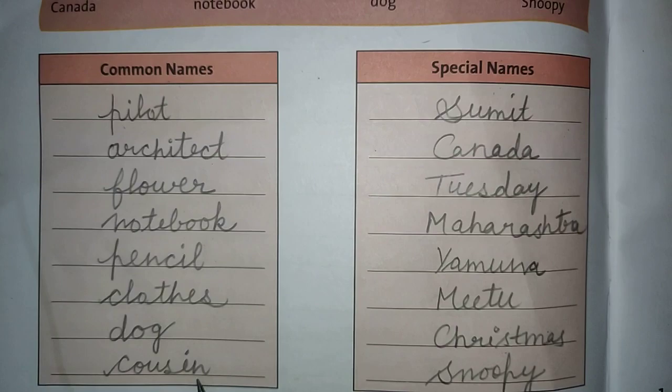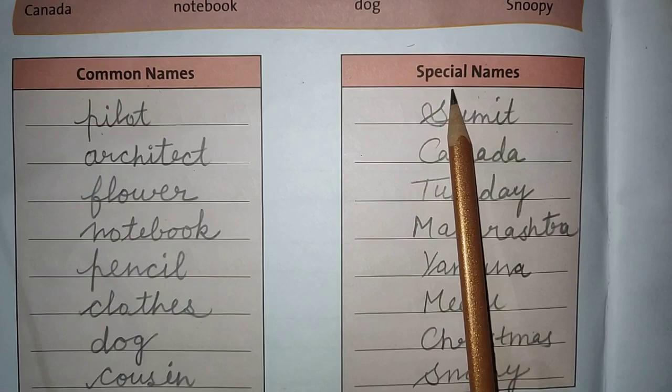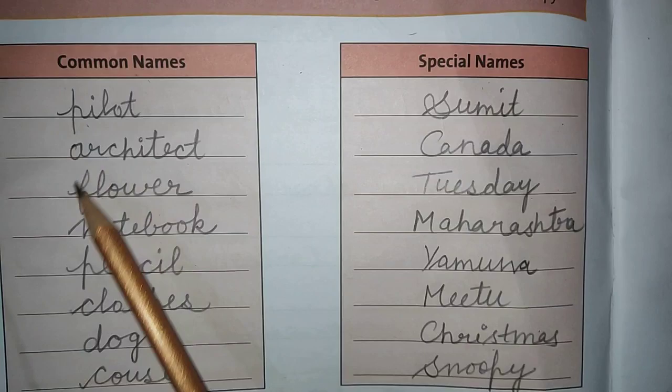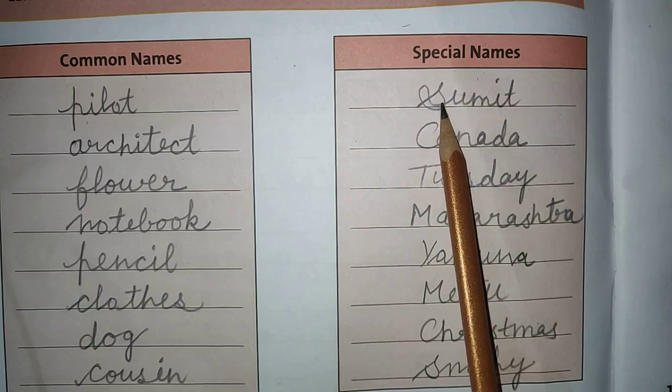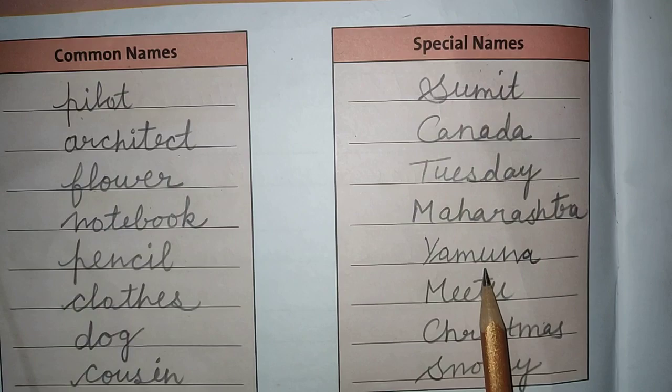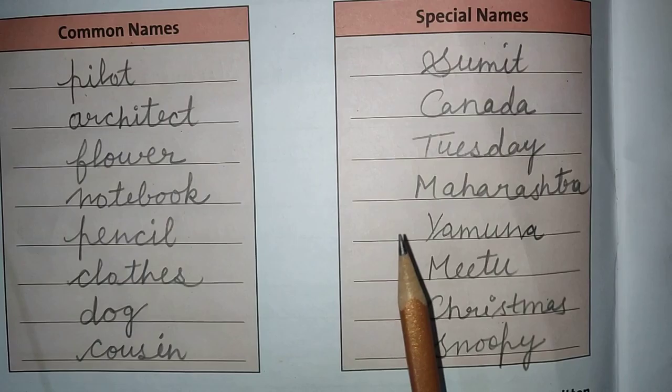And special names — some of you, okay. So, in common names, what will the first letter be? Small letter. And in special names? The first letter will be big — capital. So the special names are: Smith, Canada, Tuesday, Maharashtra, Yamuna, Mitu, Christmas, and Snoopy.